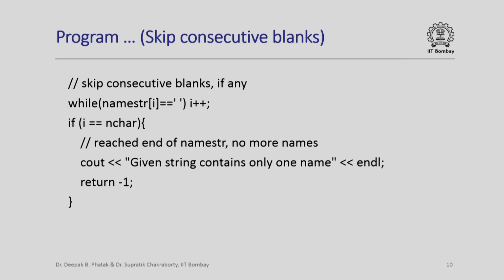Now if I have already encountered the end of the string namestring - please remember the last non-blank character would be a backslash 0 - if that is so, then I will say that I have reached the end of the namestring, there are no more names. I have so far collected only one name. So I will print an exception: given string contains only one name, and I will return with a flag minus 1. Notice that this code permits me to handle odd names like Dastagir that we saw in our sample to be properly processed.